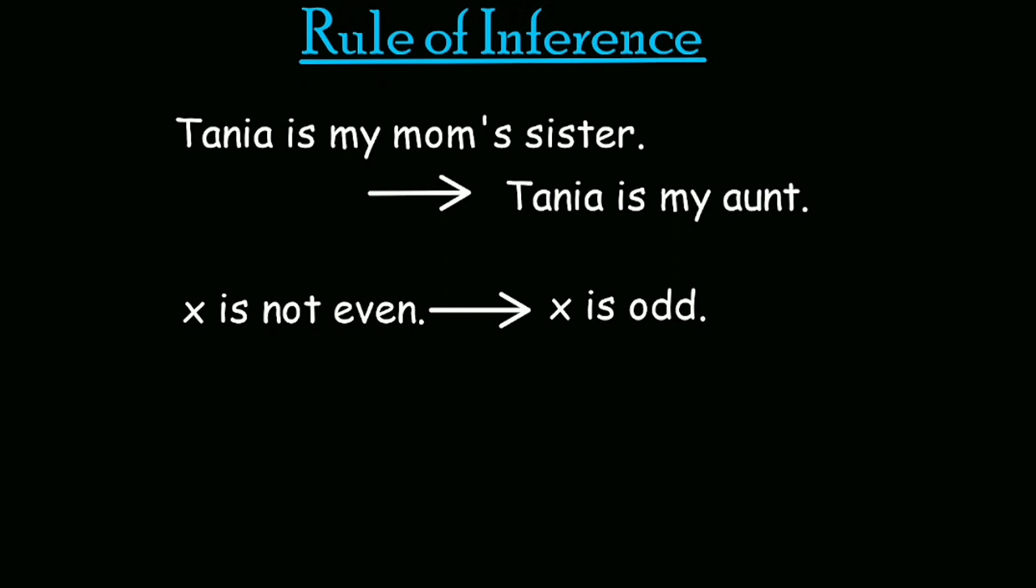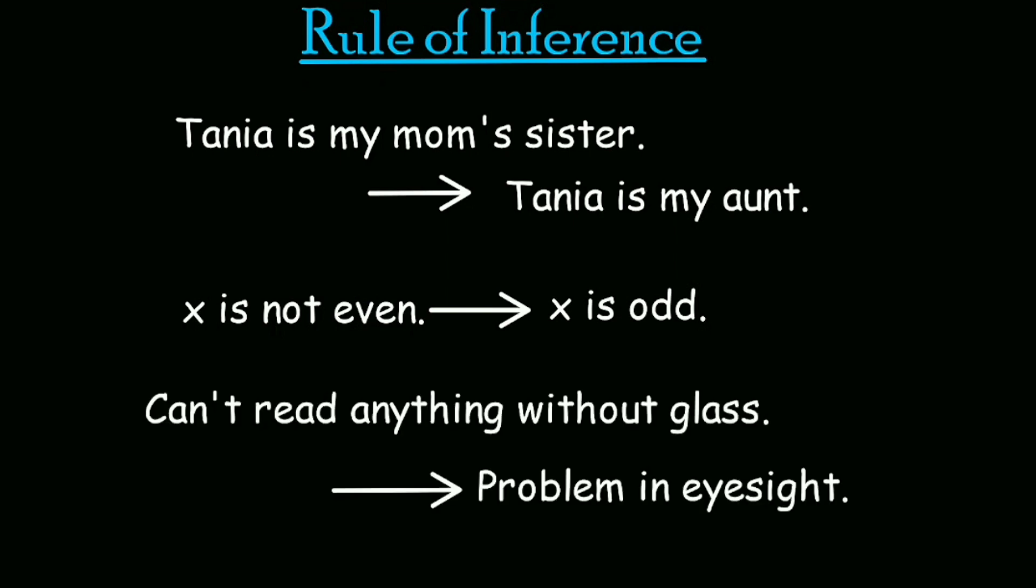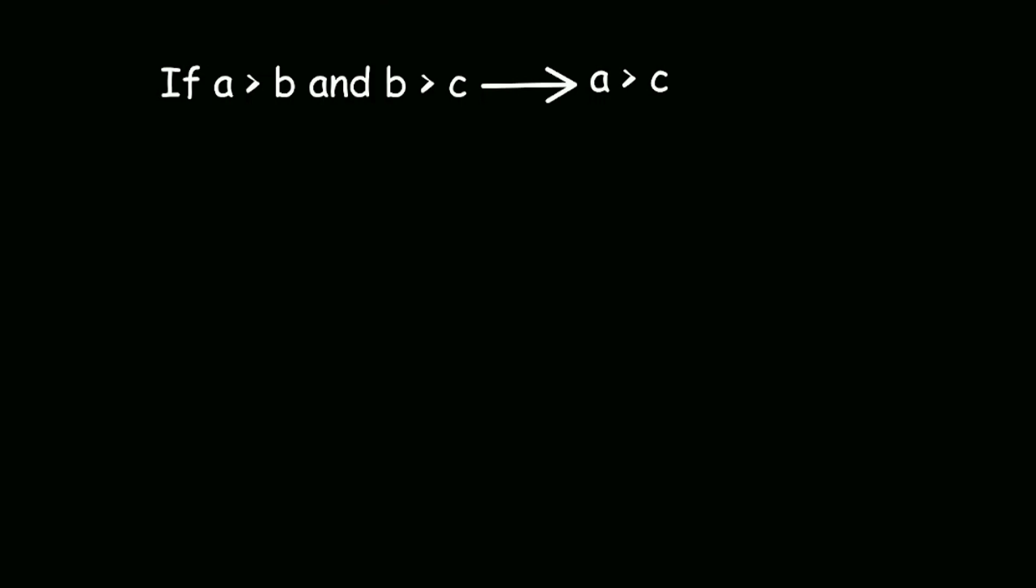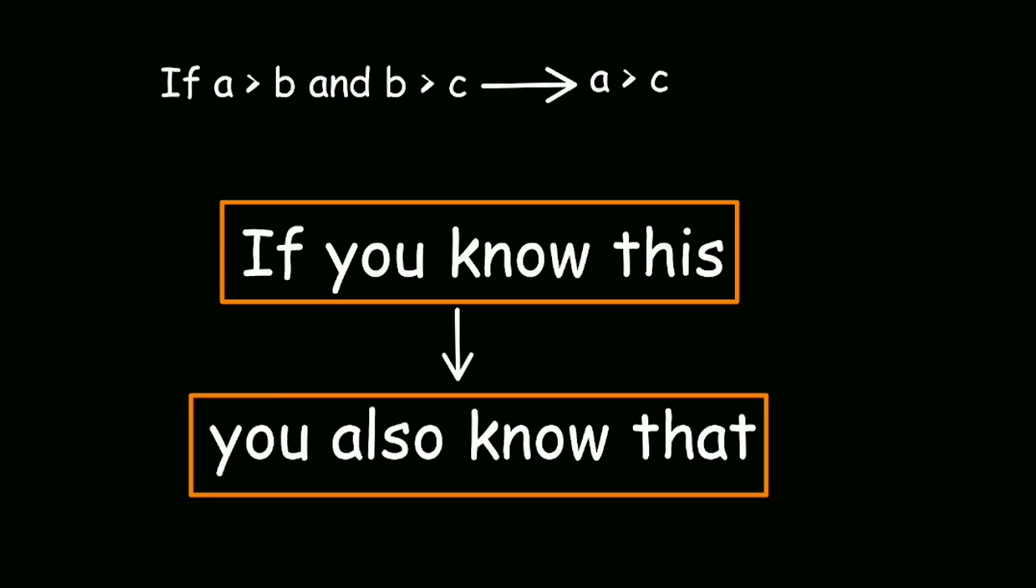Another example is, let's say one of your friends cannot read anything without eyeglasses. You can conclude that he has some problems with his eyes, right? One final example, which we already discussed before. If a is greater than b and b is greater than c, then we have a is greater than c. In all these cases, the rule of inference has very similar structure. If you know this, you also know that. So the rule of inference is about inferring something from something known or given.